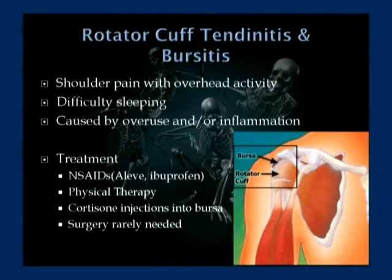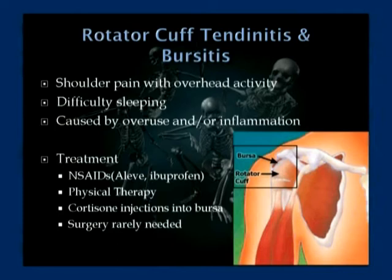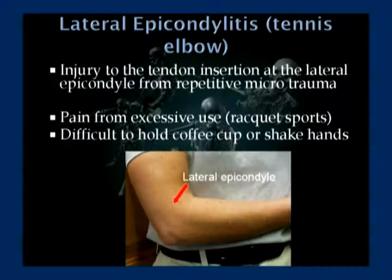Usually in the spring, people go out and play tennis — first couple times out they swing too much, overuse it, and come in complaining of shoulder pain. The treatment generally includes standard over-the-counter anti-inflammatory medications like Aleve or ibuprofen. Physical therapy is very helpful. Occasionally we'll inject cortisone directly into the bursa. Surgery is very rarely needed, but if all else fails, there are some procedures we can do.